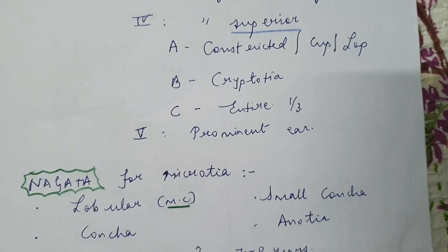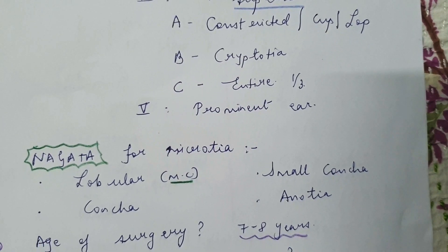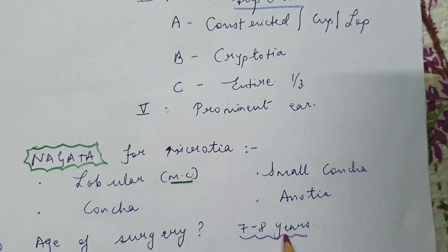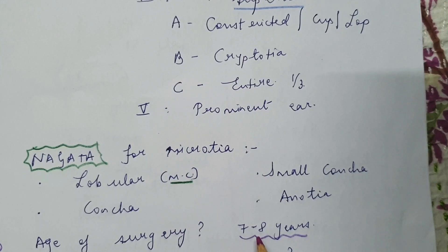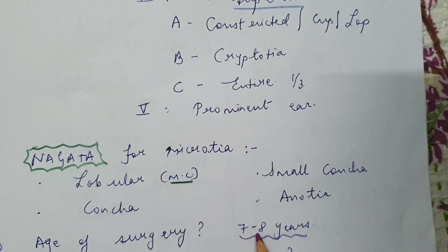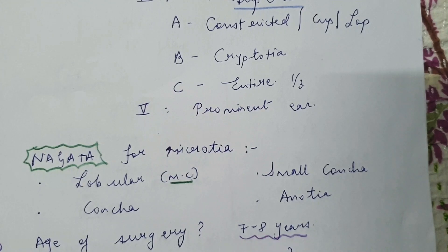There are a few important points asked regarding microtia, such as the age of surgery. The general consensus is that the child is operated at seven to eight years of age. Around this age, the contralateral ear — if present — assumes almost 90 percent of its adult size, so we have a good template for recreating the missing ear. We also don't wait for adult age because if we try to take costal cartilage framework, calcification starts to occur in the cartilages.